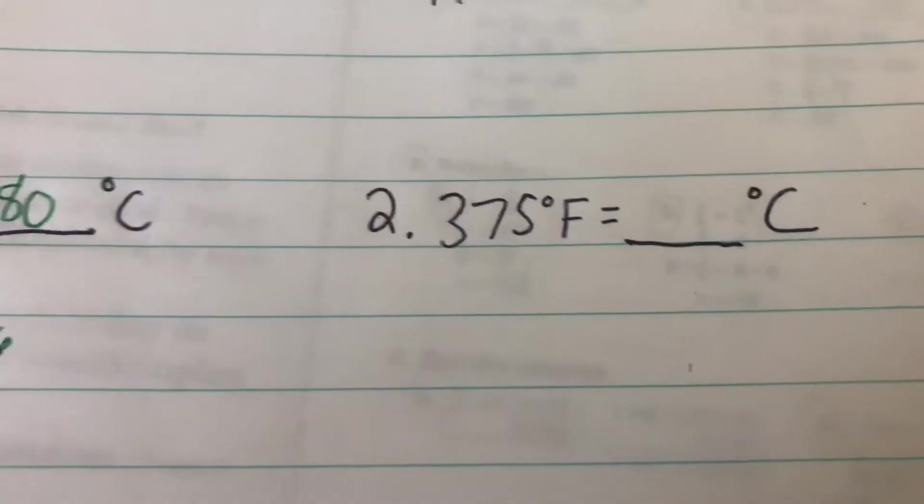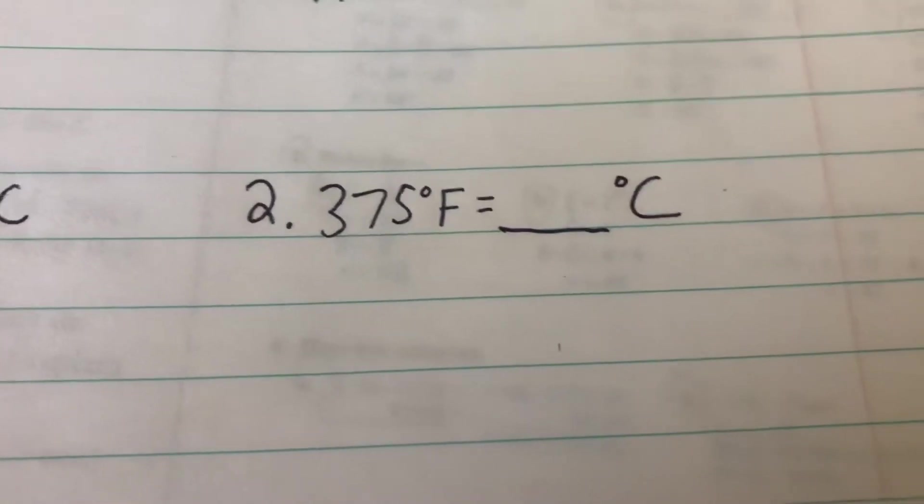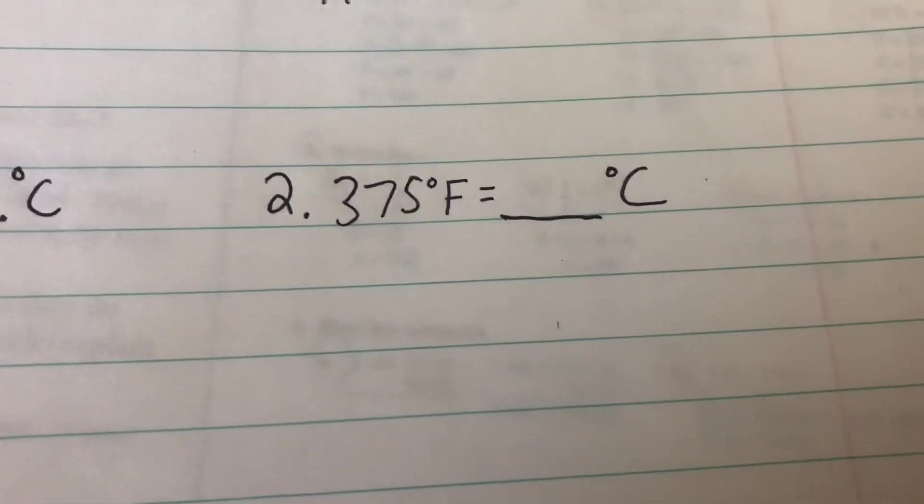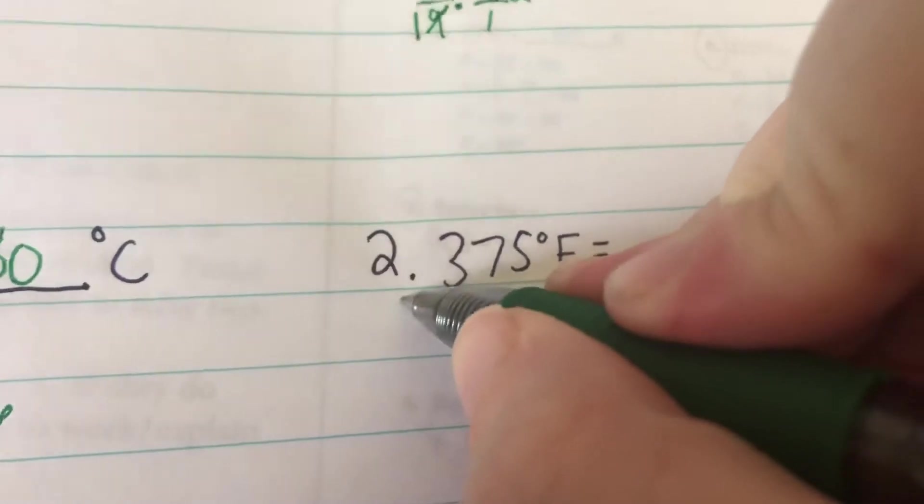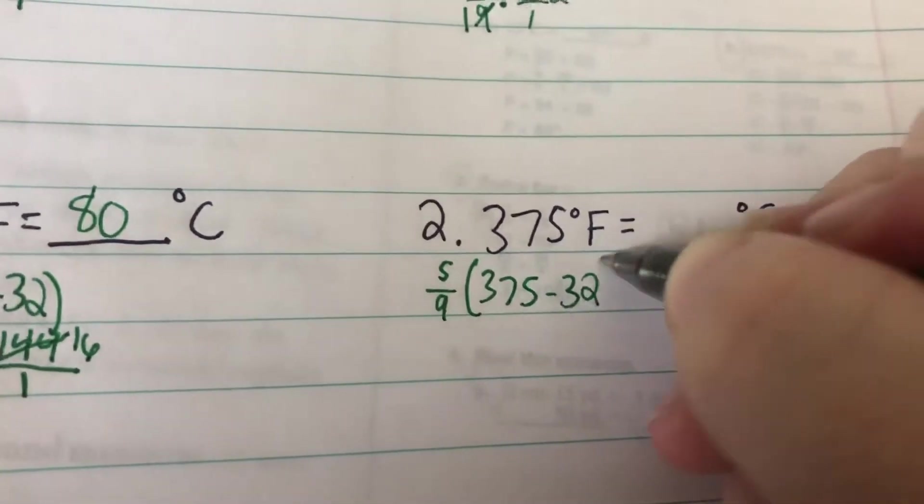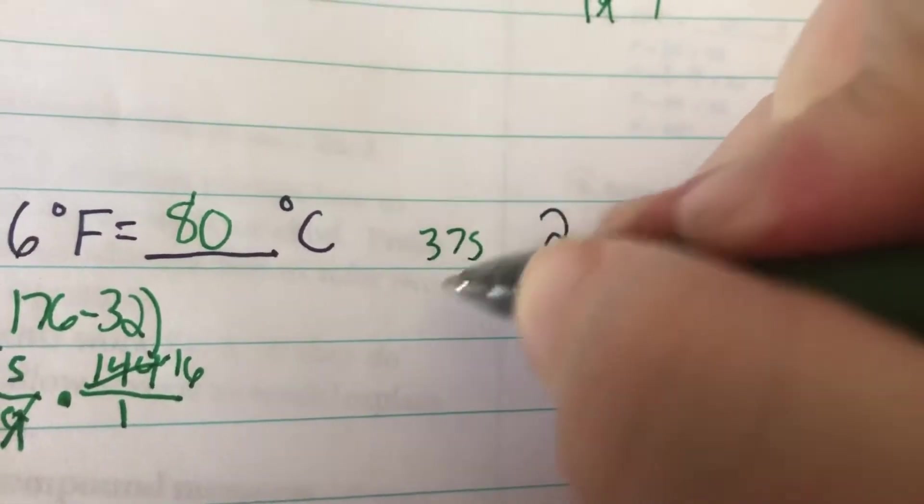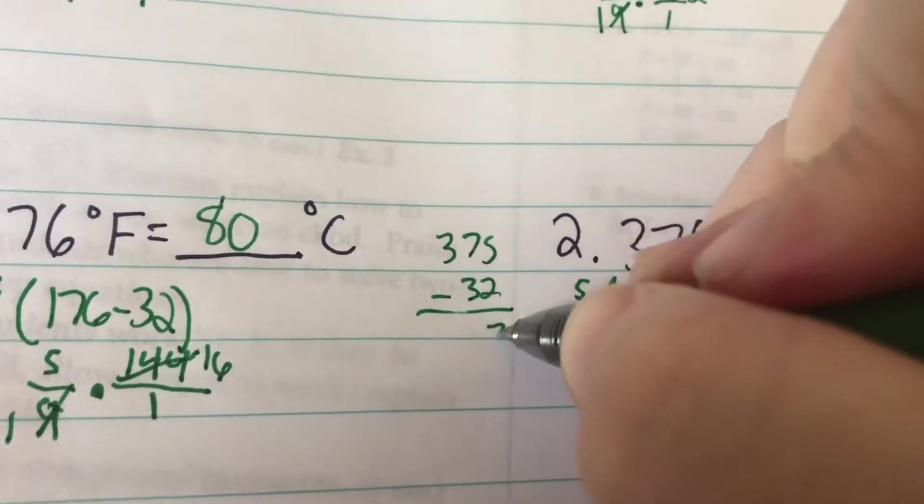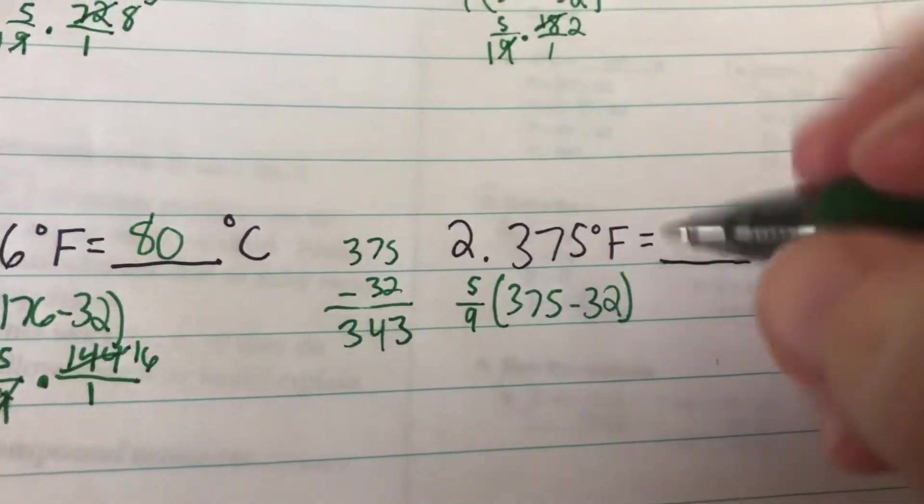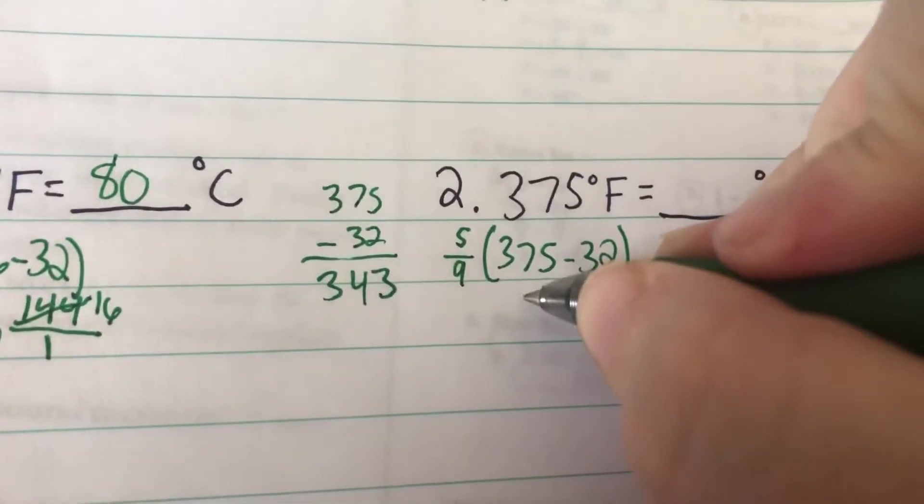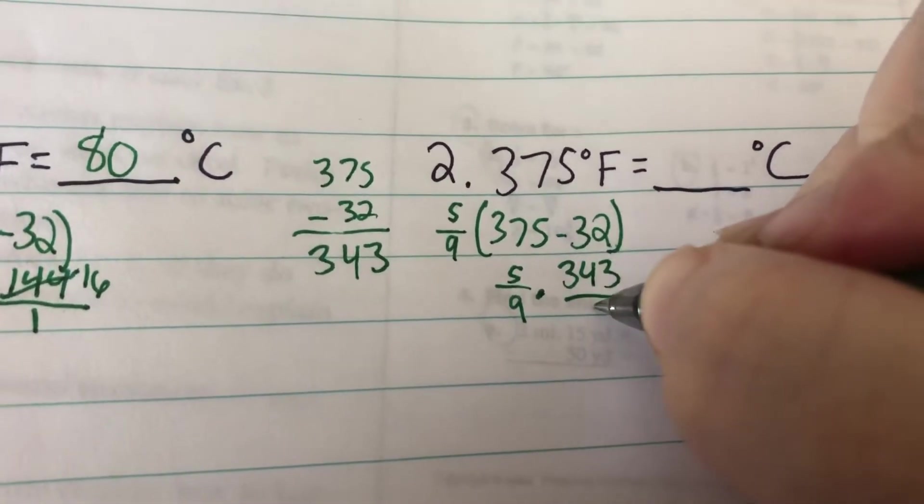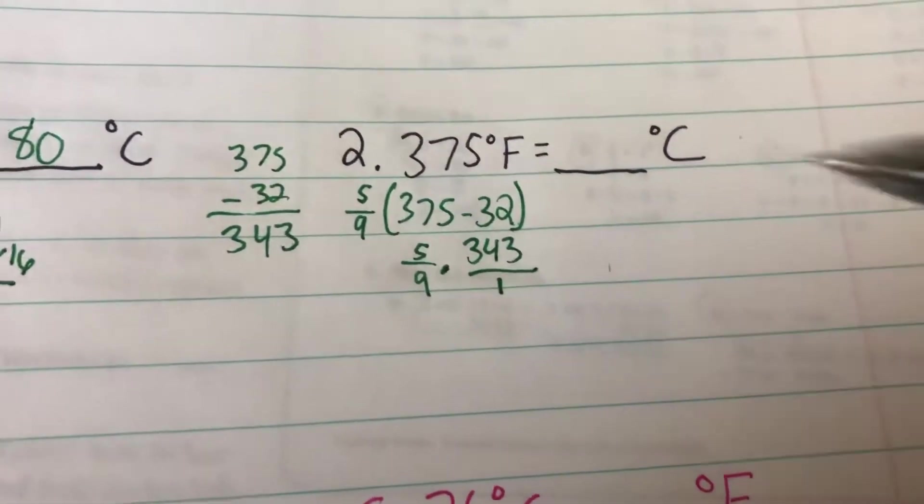Number 2. It was a word problem about baking. It said the oven had to be 375 degrees Fahrenheit and wanted to know what that was in Celsius. Same process. 5/9 times 375 minus 32. 375 minus 32: 5 minus 2 is 3, 7 minus 3 is 4, 3 minus nothing is 3. So it's going to become 5/9 times 343 over 1. Now I'm going to divide to see if 9 can go into 343.